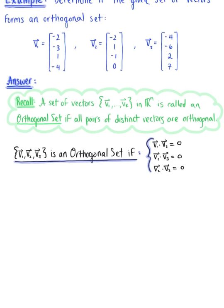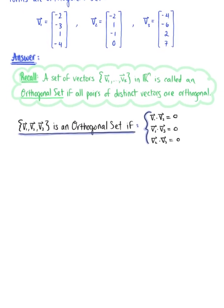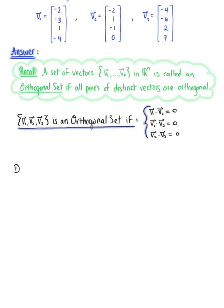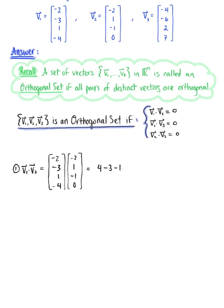We have three cases to check. In case one, we are checking the dot product of vector v sub 1 with vector v sub 2. We have the vector (−2, −3, 1, −4) dotted with vector v sub 2 with components (−2, 1, −1, 0). Computing this gives us 4 − 3 − 1 + 0, which equals 0. So case one is good.